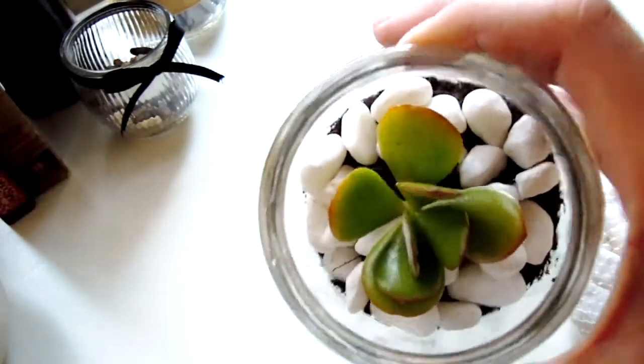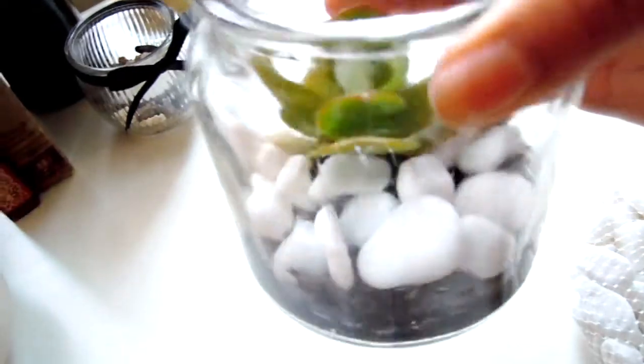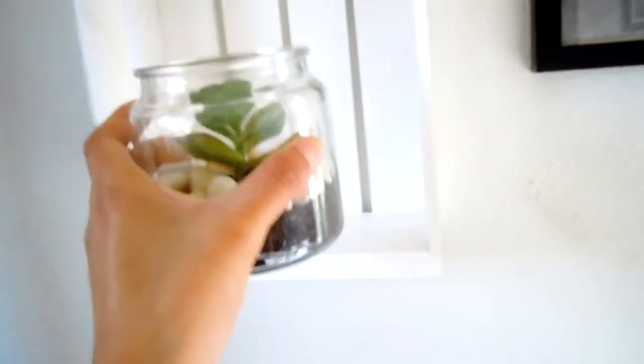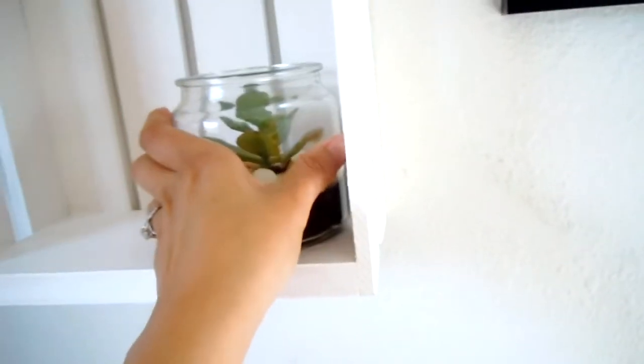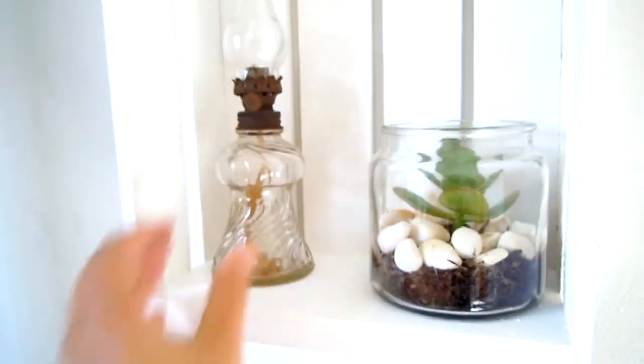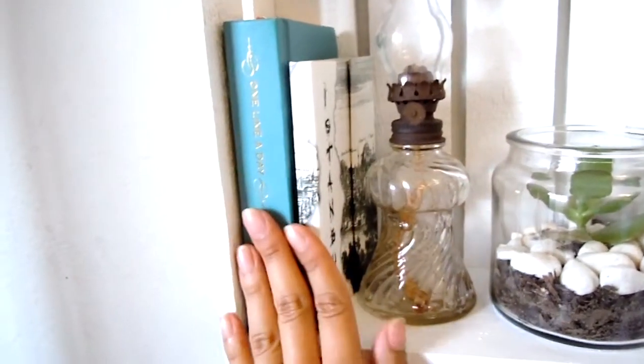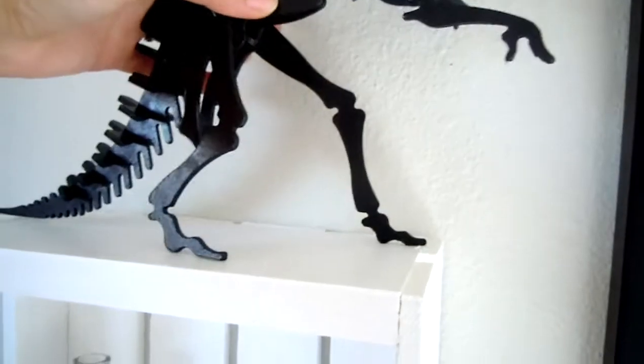And there you have it, some easy succulent decor. I decided to place mine on my new crate shelf along with a kerosene lantern that I got from my grandmother, a couple books, and this totally awesome dinosaur skeleton.